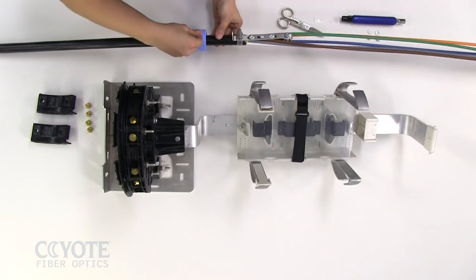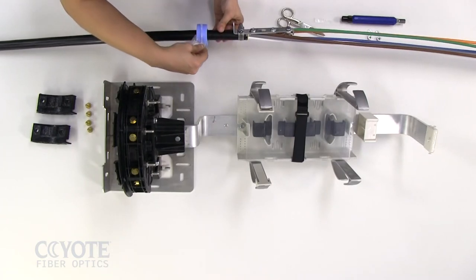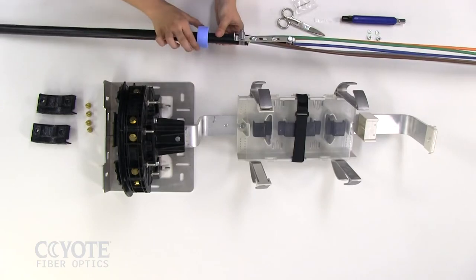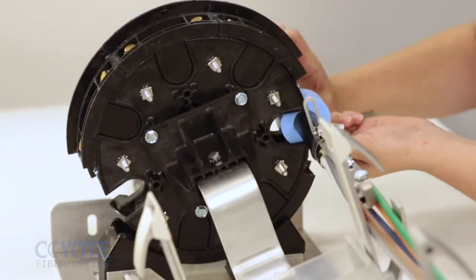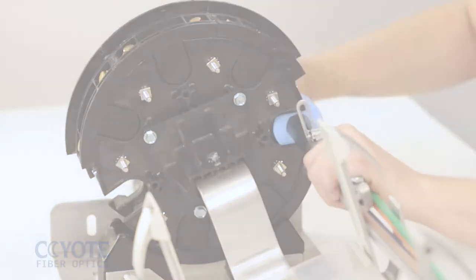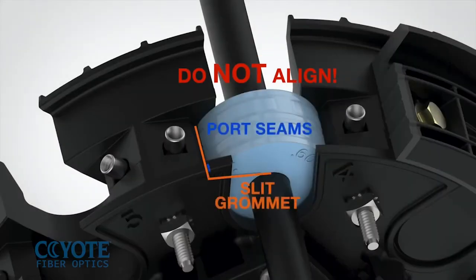Spread lubricant evenly on the outer surface of the grommet. Position the grommet into the end plate port. Do not align a slit grommet with a port seam.